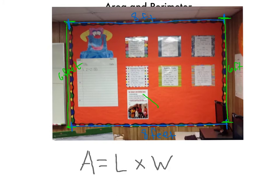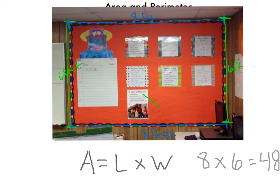Does it matter which one you label which? It doesn't technically matter, but I've always done the longer side for L — so my length is always the longer one. So if we fill in our area, L would be 8 and my width would be 6, and 8 times 6 — our area would be 48 square feet. You know how we can remember that little squared symbol? Because it's a 2D shape, so we put a little 2 for the square.